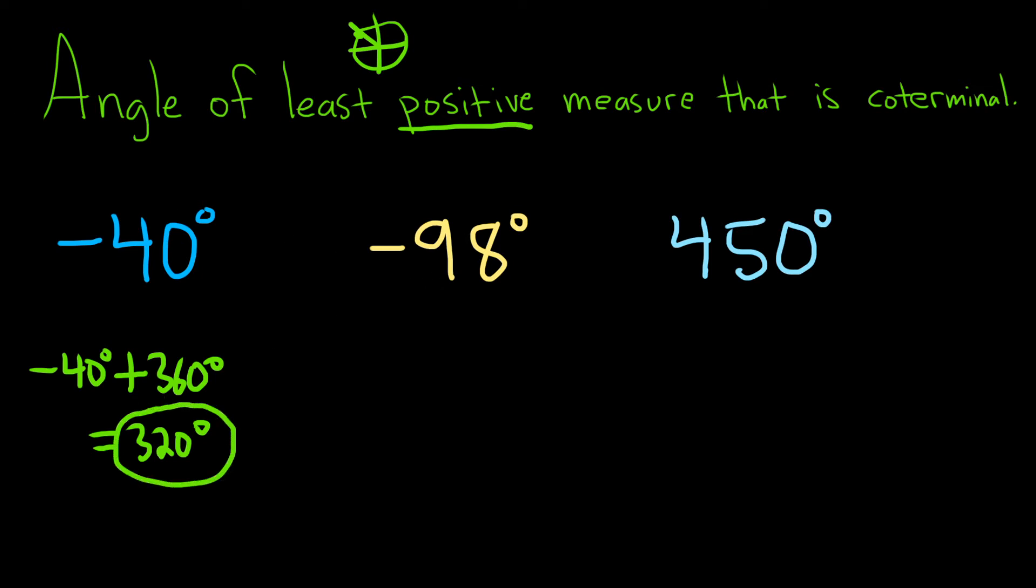Same thing here. This one is negative, so if we just add 360. Let me take my calculator. Negative 98 plus 360. So negative 98 degrees plus 360 degrees, this gives us 262 degrees.